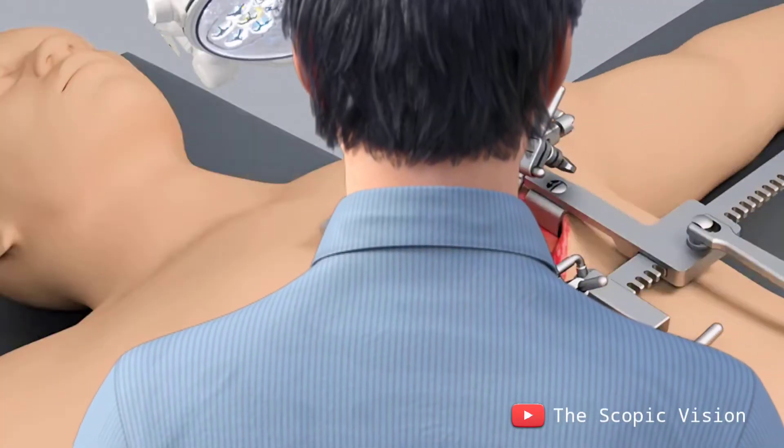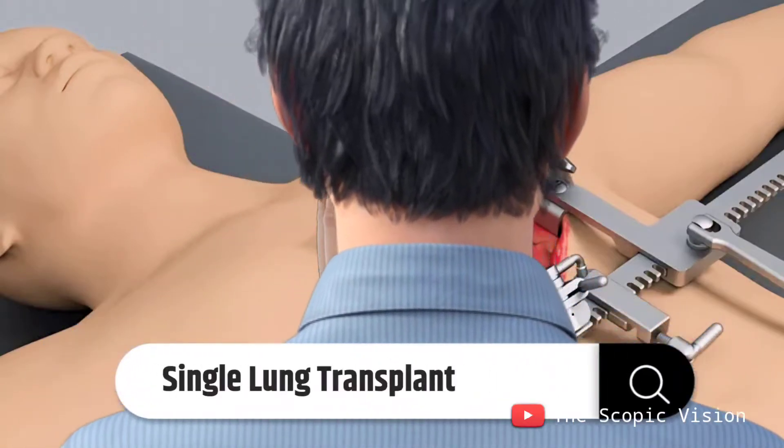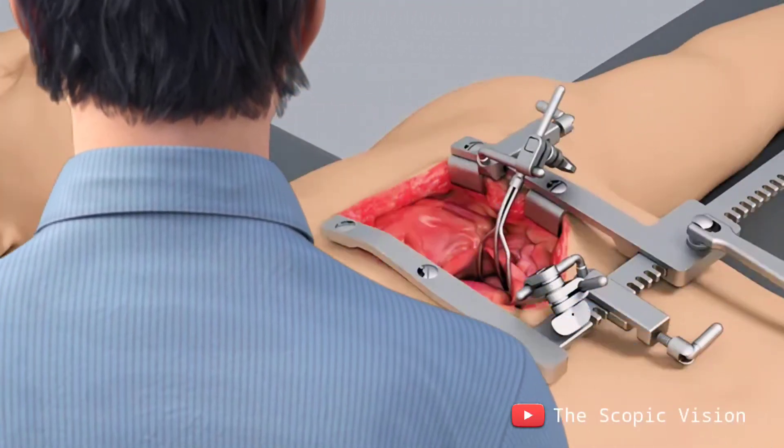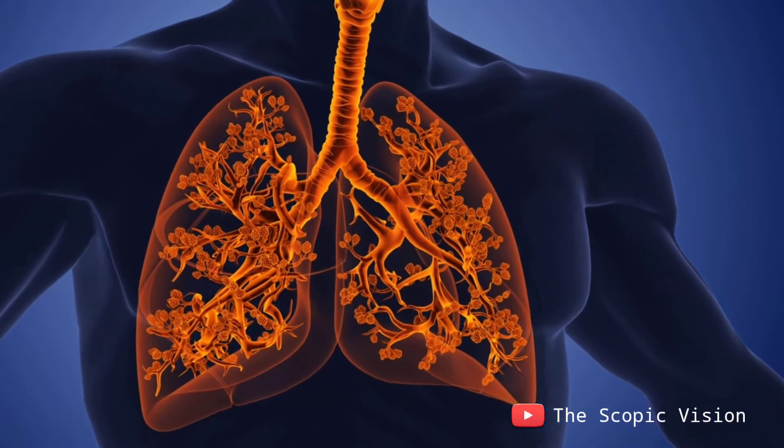In certain diseases, only one lung is transplanted, known as a single lung transplant, while both lungs are replaced in cases like cystic fibrosis, referred to as a double lung transplant.